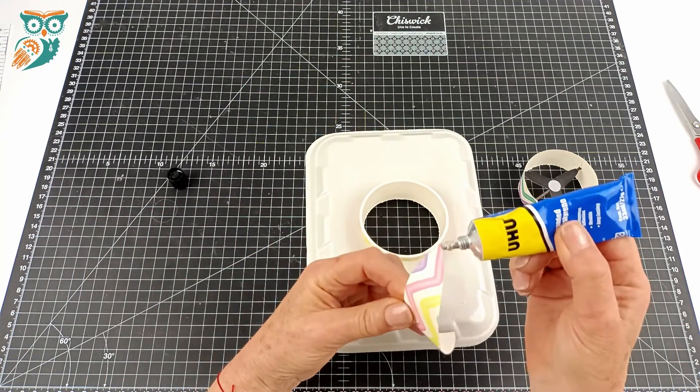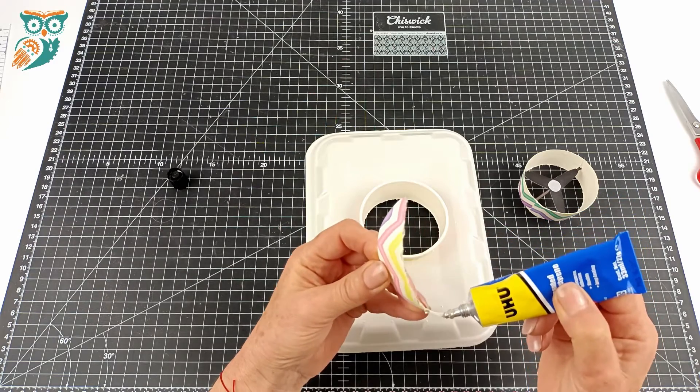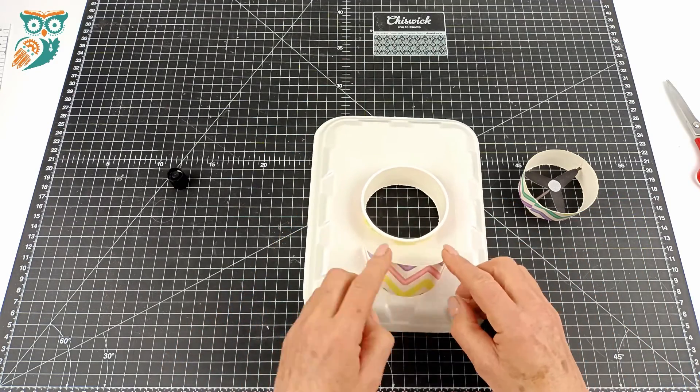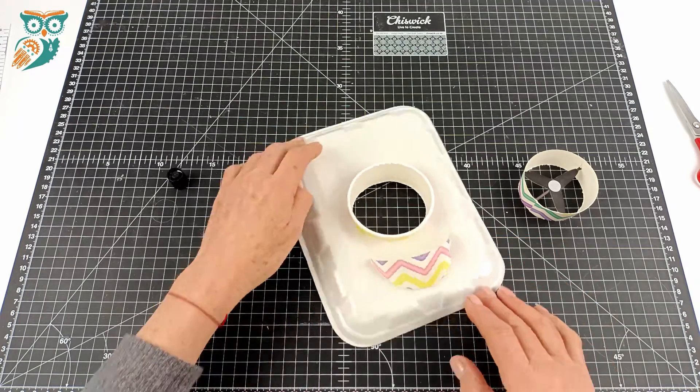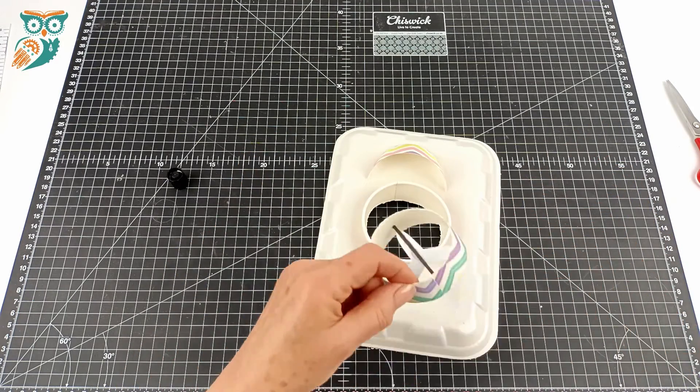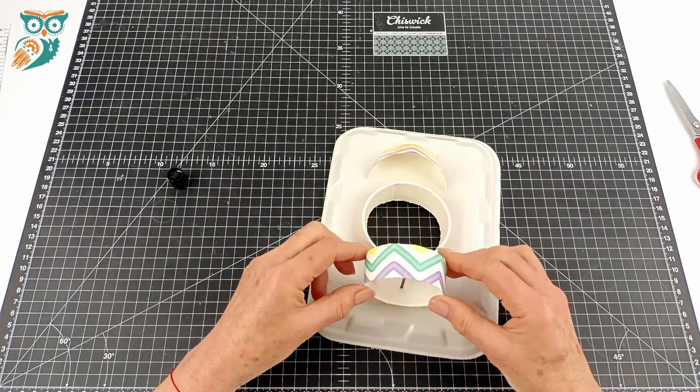Now we're going to glue the windshield in place. If your kids want to get creative, they could put like a little Lego minifig or some sort of figurine behind the windshield so it looks like they're driving. Now we're going to take our propeller and just glue it into place on the back.